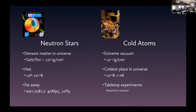The densest parts of matter in the universe are related to the best vacuums in the universe, and some of the hottest things in the universe are related to some of the coldest places. These neutron stars are really far away, but the experiments are just down a few floors in Webster.